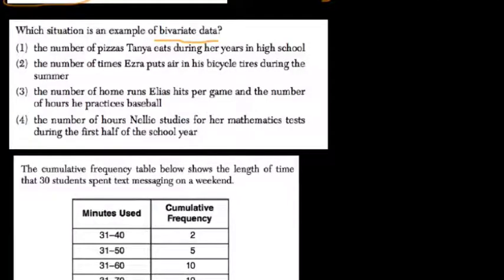Which situation is an example of bivariate data? Bivariate means two variables, and the variables X and Y or whatever impact each other. So you're studying the relationship between two things. That's what bivariate is.